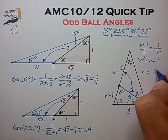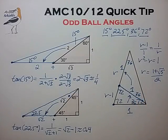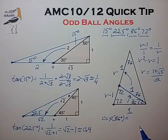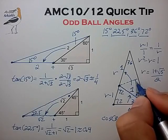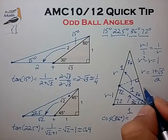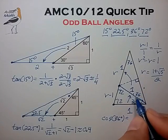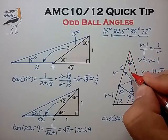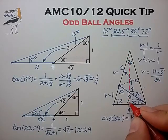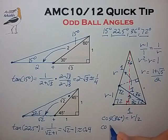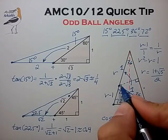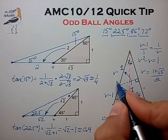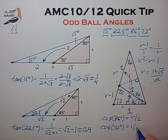We find that r equals 1 plus root 5 divided by 2. Once we know r, it's pretty easy to calculate cosine of 36 degrees by drawing a perpendicular bisector to the side length and finding the ratio of the adjacent to the hypotenuse. The adjacent is r divided by 2, and the hypotenuse is 1, so cosine of 36 is simply r divided by 2. We can do the same trick to find cosine of 72 degrees by drawing the perpendicular bisector to the base. Cosine of 72 degrees equals the adjacent divided by the hypotenuse — the adjacent is one half and the hypotenuse is r — so cosine of 72 degrees is 1 divided by 2r.